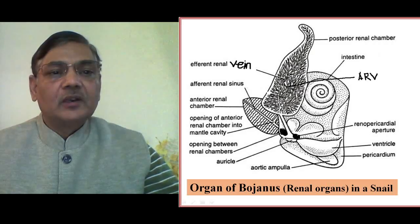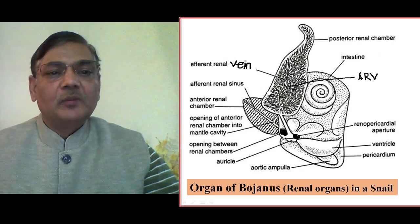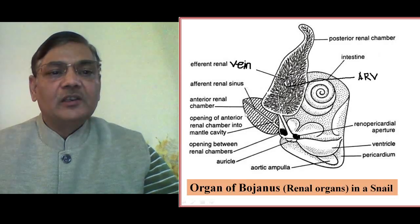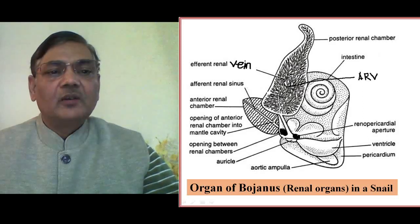Likewise, on the lower side, there is an efferent renal sinus, and on either side of this efferent renal sinus, many similar lamellae or leaf-like structures are present. The anterior renal chamber is smaller, reddish in color, and internally possesses a number of segments or internal folds referred to as lamellae.